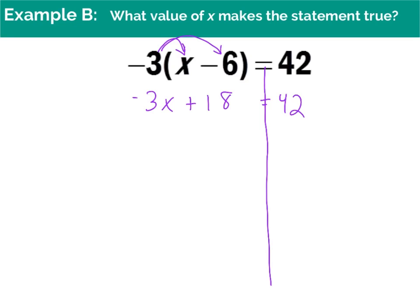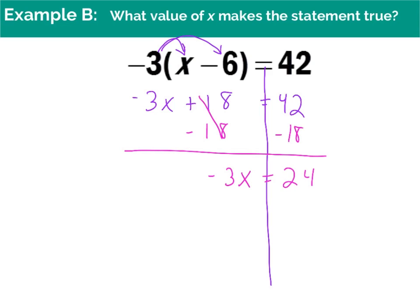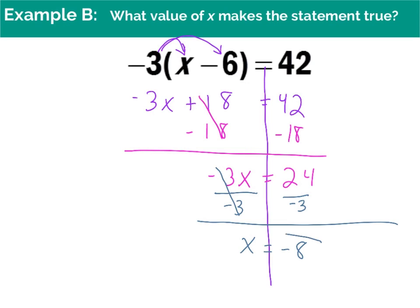Now I perform inverse operations. The inverse of positive 18 is minus 18, so I subtract 18 from both sides. Positive 18 and negative 18 cancel, leaving negative 3x on one side. 42 minus 18 is 24. Now I need to get rid of the negative 3 in front of x — since it's multiplication, the inverse is division, so I divide both sides by negative 3. Negative 3 divided by negative 3 gives 1x, and 24 divided by negative 3 is negative 8, because a positive divided by a negative is negative. So x = -8.